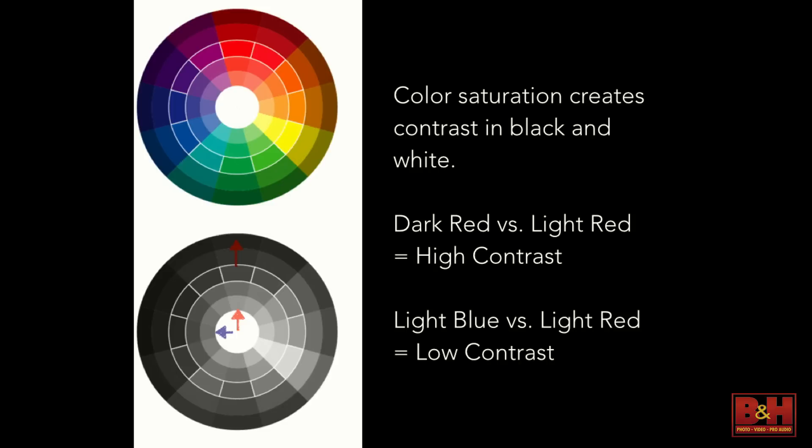There's very low contrast between a light blue and a light red. So when you're looking at an image thinking about converting to black and white, you want to see a lot of contrast. If you have a very vibrant blue and a vibrant red — say flowers — mid-tone-wise they're going to be exactly the same. You really need that light and dark for a nice contrasty black and white image.